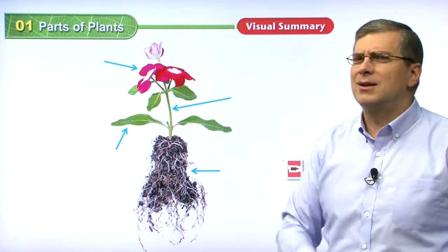Now let's talk about the uses of plant parts. We've talked about the many different parts of a plant. Now let's talk about how we use these parts. Plant parts: stem, roots, leaves, and flower — these are all plant parts. On the bottom row we have things made from plant parts. What kinds of things do we make from plants that we use in our everyday life? That's what this chart shows.